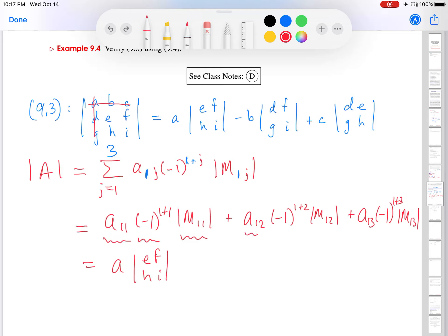And then I'm going to go here to the second term. A1,2 is, let's see, first row, second column. That's B. So plus B. And then minus 1 cubed is negative 1. M1,2 is the matrix obtained by deleting the first row and second column. So I get determinant of D, F, G, I.